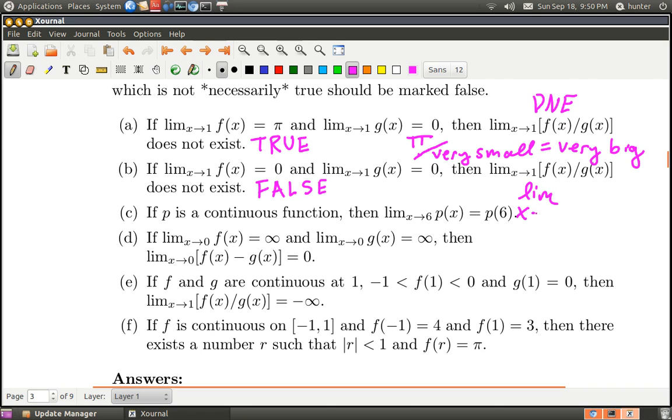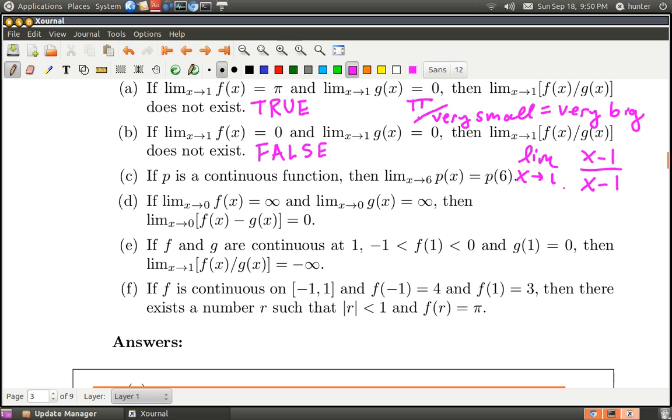Consider the limit as x goes to 1 of (x-1)/(x-1). This is exactly the situation described: the numerator goes to 0, the denominator goes to 0. At x equals 1 you get 0/0, which is not defined. But the limit doesn't care what happens exactly at 1, just what happens around 1. And around 1, something over itself is always 1. So this limit is 1.